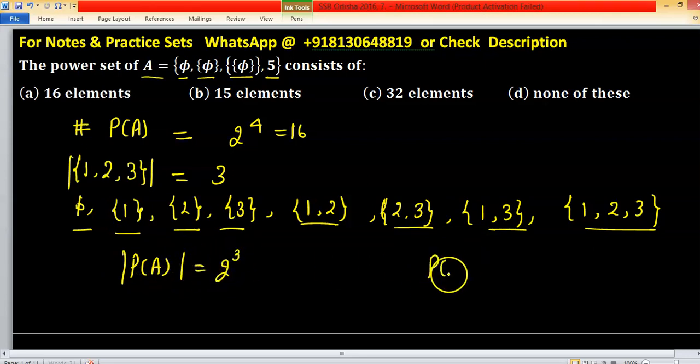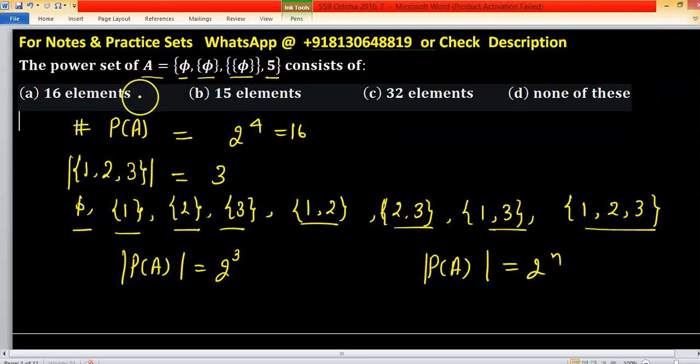In general, cardinality of power set of A equals to 2 raised to the power n. According to this option, A is right one.